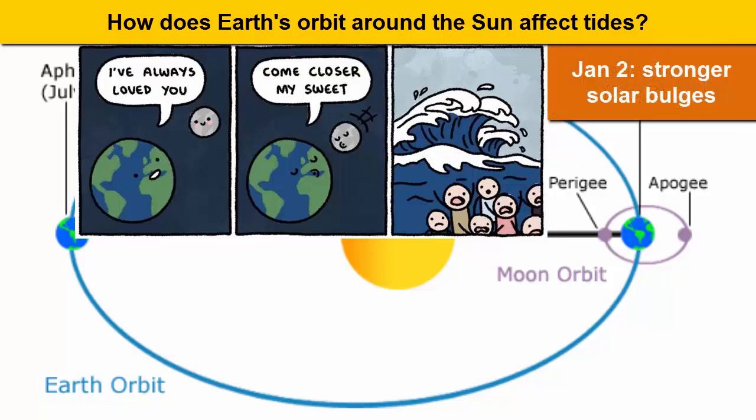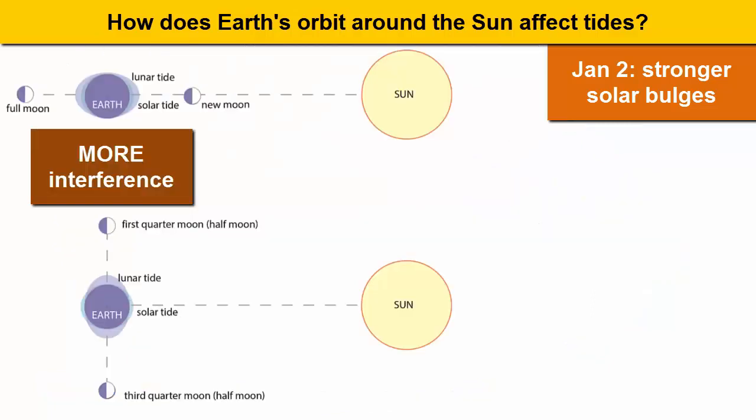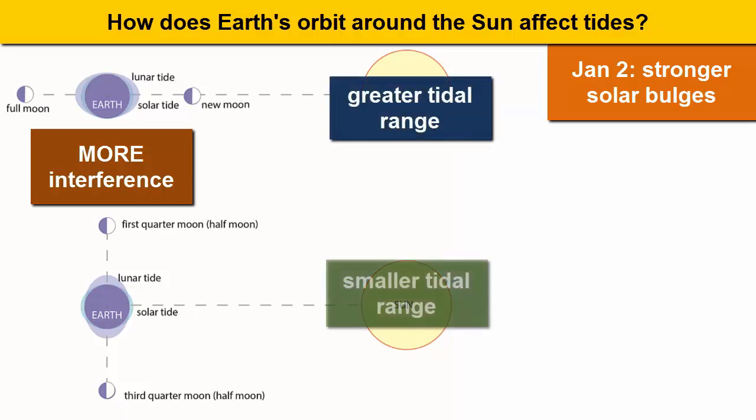Greater force differential, so bigger solar bulges. And bigger solar bulges means greater interference with the lunar bulges, more constructive interference when they're in phase and more destructive interference when they're out of phase. The spring tides would have an even greater tidal range and the neap tides an even smaller one.